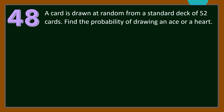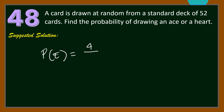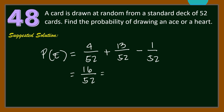Number 48. A card is drawn at random from a standard deck of 52 cards. Find the probability of drawing an ace or a heart. Let E be that event. The probability equals 4 over 52 for aces, plus 13 over 52 for hearts, minus 1 over 52 for the ace of hearts counted in both. That gives 16 over 52, which simplifies to 4 over 13.